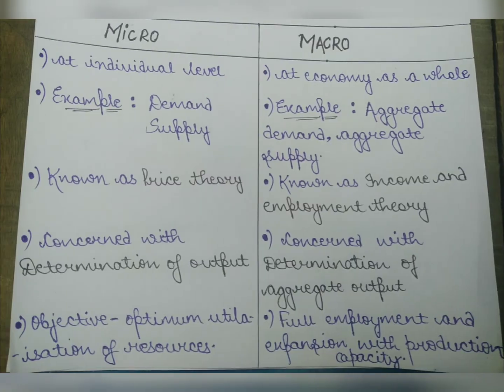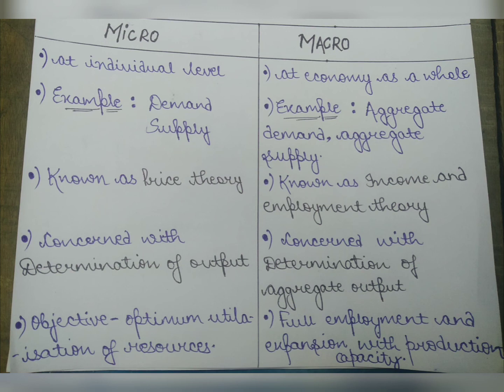Micro economics is the study of economic problems at an individual or personal level, while macro economics considers the economy as a whole. For example, micro deals with demand and supply of any product personally, while macro deals with aggregate demand and aggregate supply. Micro is also called price theory; macro is called income and employment theory.